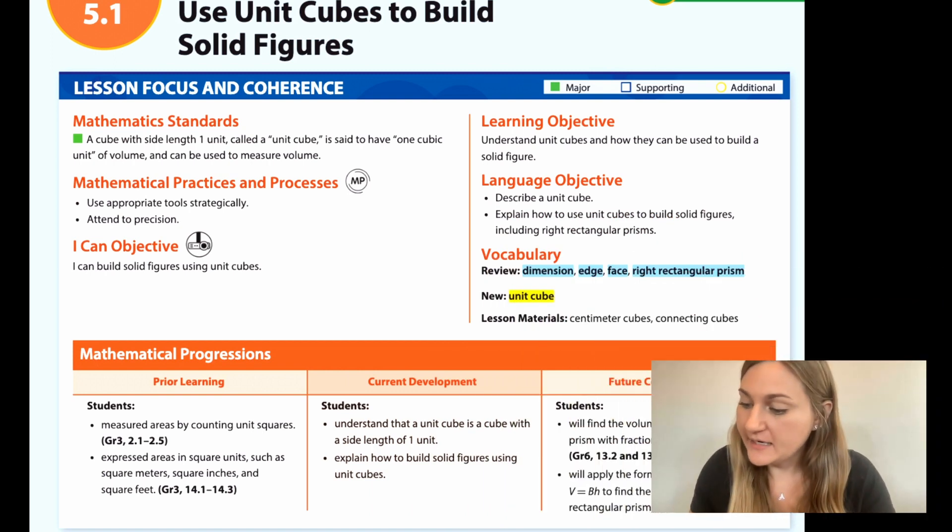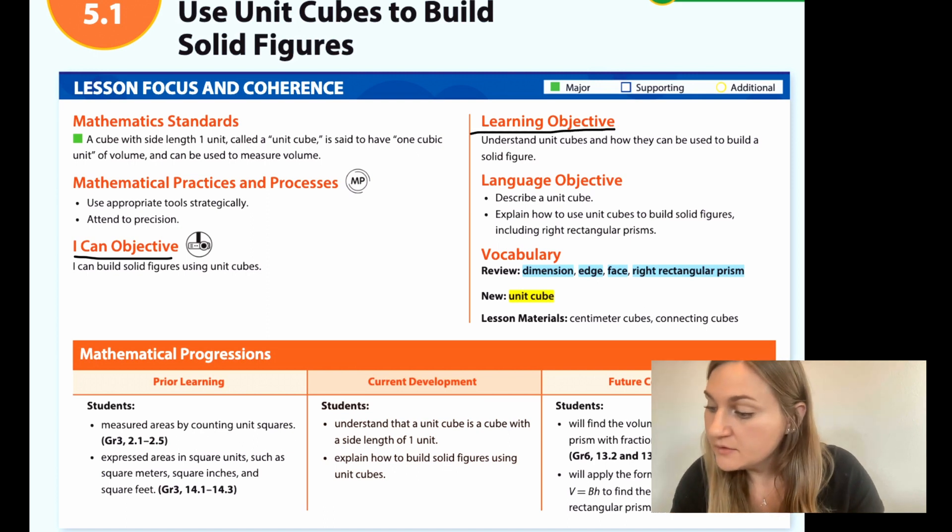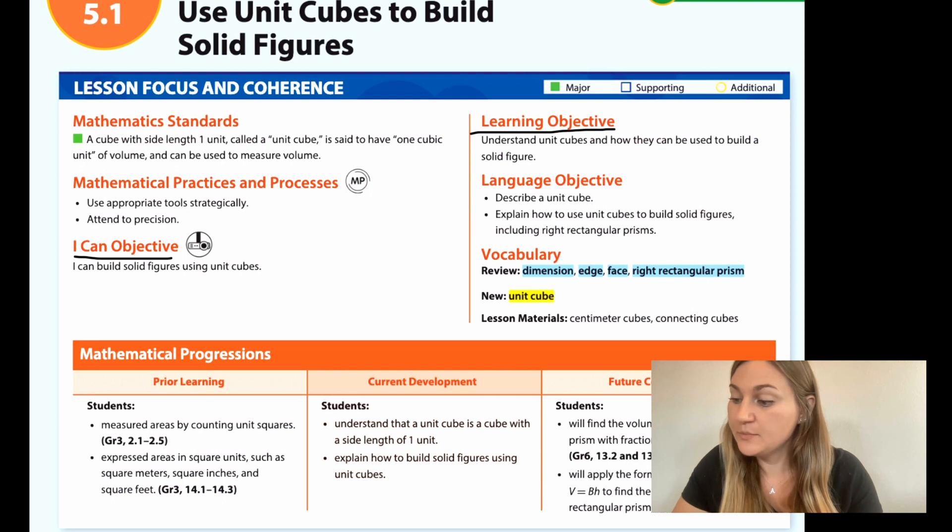I'm going to start off by going over the I can objective. This says I can build solid figures using unit cubes. The learning objective is understand unit cubes and how they can be used to build a solid figure. The prior learning says students measured area by counting unit squares and students expressed areas in square units such as square meters, square inches, and square feet.